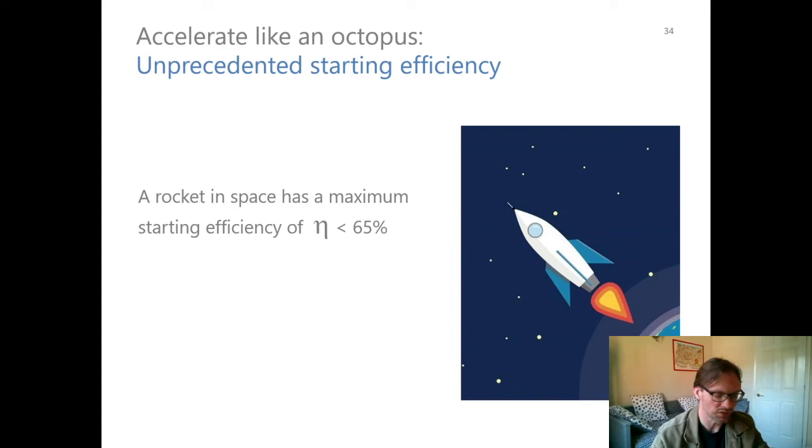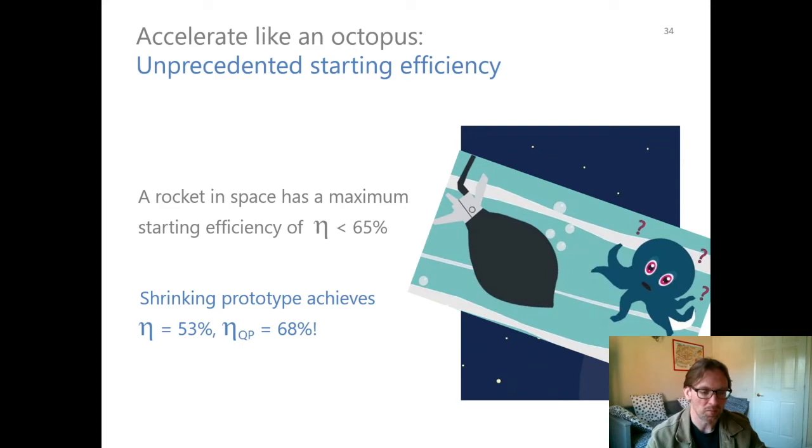Underwater, it seems like you'd be much worse because you have to move a bunch of liquid around, you've got drag, all kinds of stuff. But our measured efficiency is 68%. So this is the quasi propulsive efficiency saying how much effort did we do and how much fuel did we spend to do it.